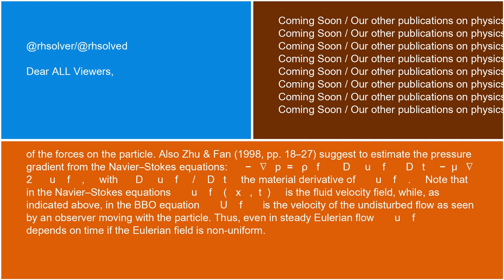Also, Zhu and Fan (1998, pages 18 to 27) suggest to estimate the pressure gradient from the Navier-Stokes equations: -∇p = ρ_f du_f/dt - μ∇²u_f, with du_f/dt the material derivative of u_f.